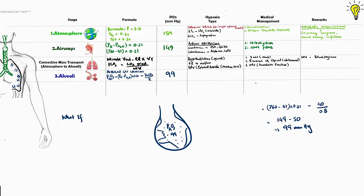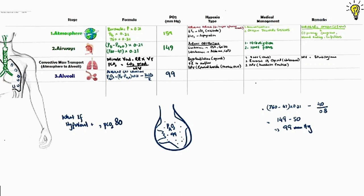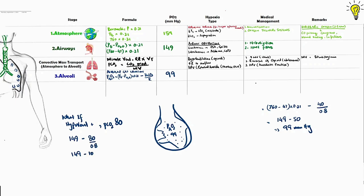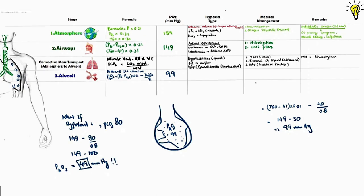What if there is hypoventilation or for any other reason carbon dioxide reaches 80 millimeters of mercury pressures. So now as per equation 149 minus 80 divided by 0.8. So 149 minus 100 meaning the pressure of oxygen in the alveoli will reduce to 49 millimeters of mercury due to dilution by higher carbon dioxide levels in alveoli. So remember around 70 to 80 millimeters of mercury carbon dioxide levels in the artery hypoxia is always present. Unless you raise the friction of oxygen by oxygen therapies.